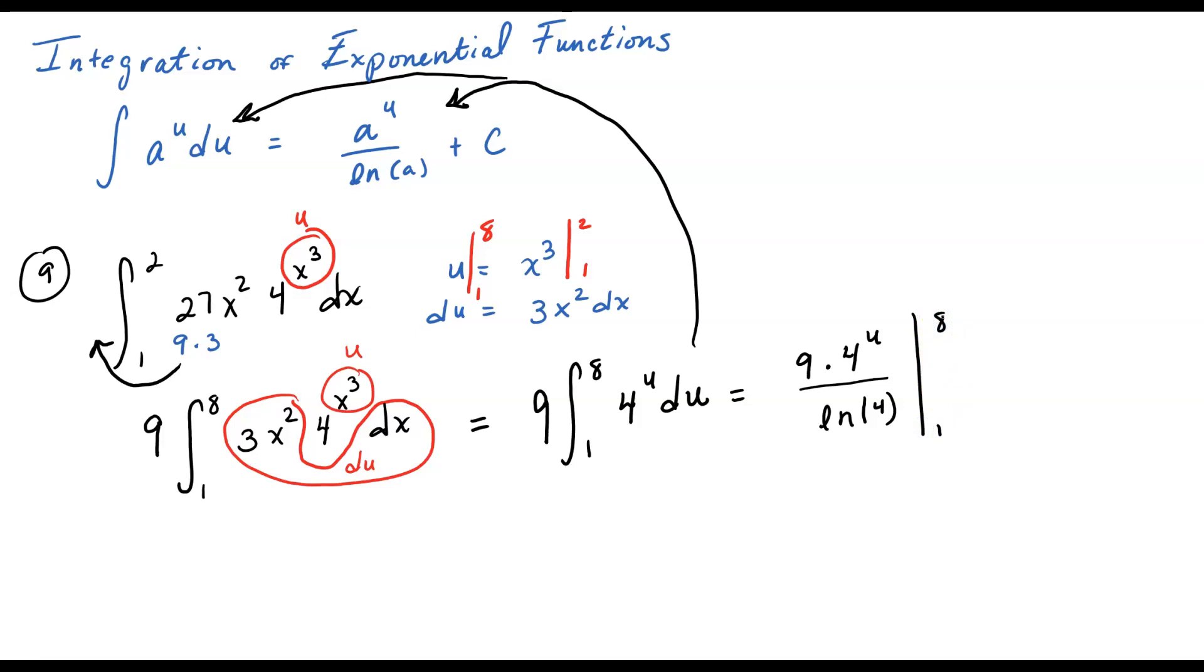So what I'm going to do, the 9 and the ln of 4, and let me put another little ring around it right there. That is a constant. There's nothing algebraic about it. It's a constant number. 9 over the natural log of 4. I basically have 4 to the u, where I'm plugging in my 1 and my 8. So, what do I get? I get 9 over the natural log of 4. I have 4 to the 8th power minus 4 to the 1st power. And you can do the math there on a calculator.